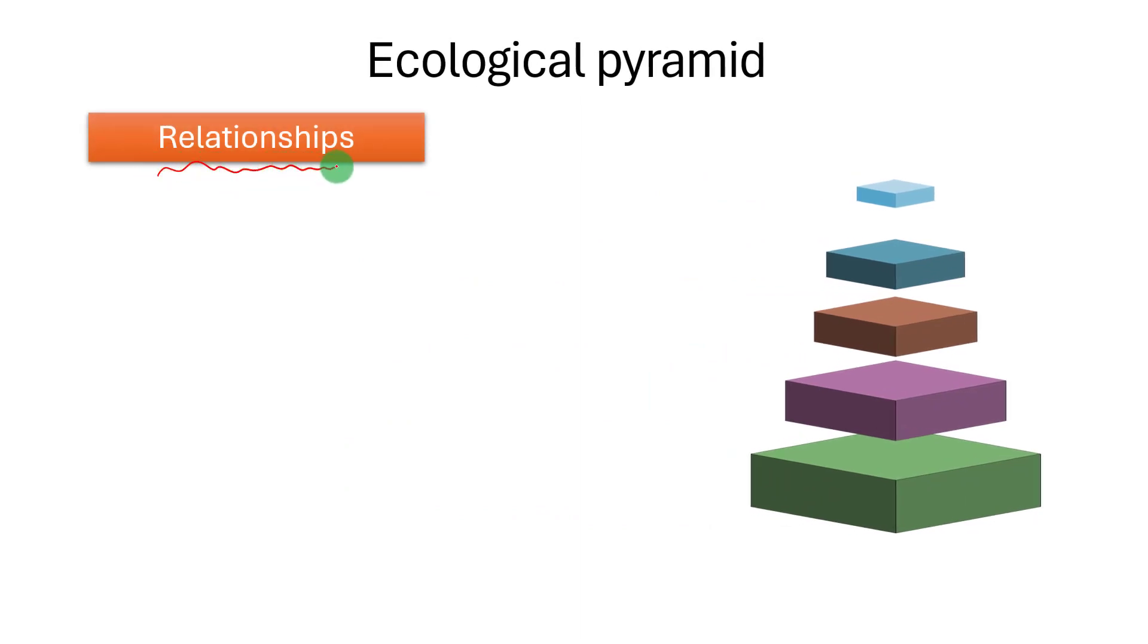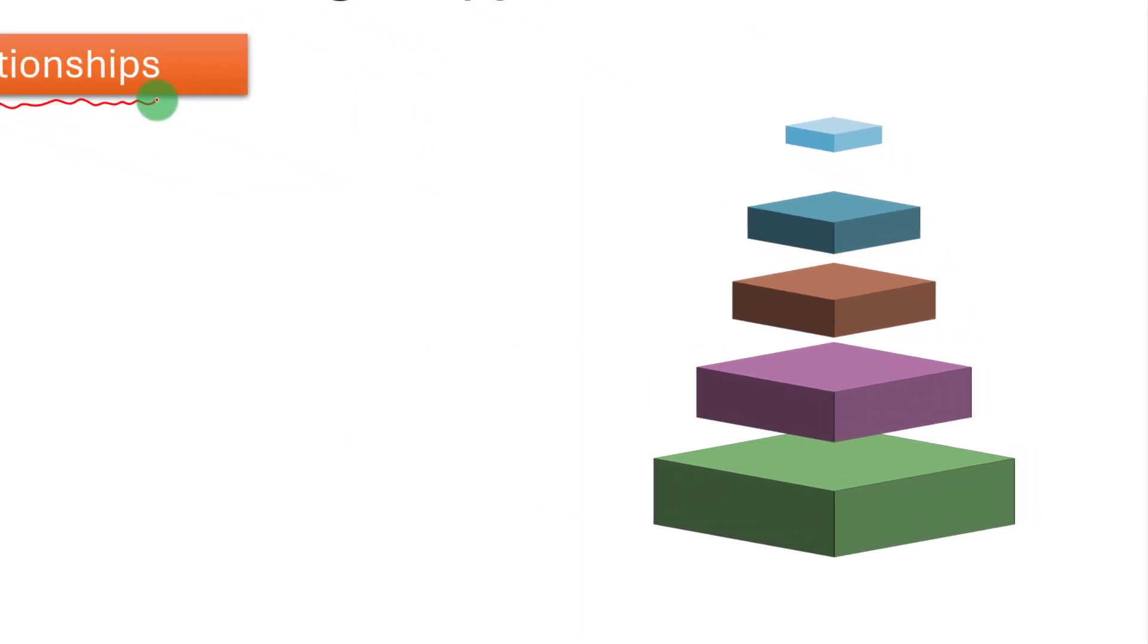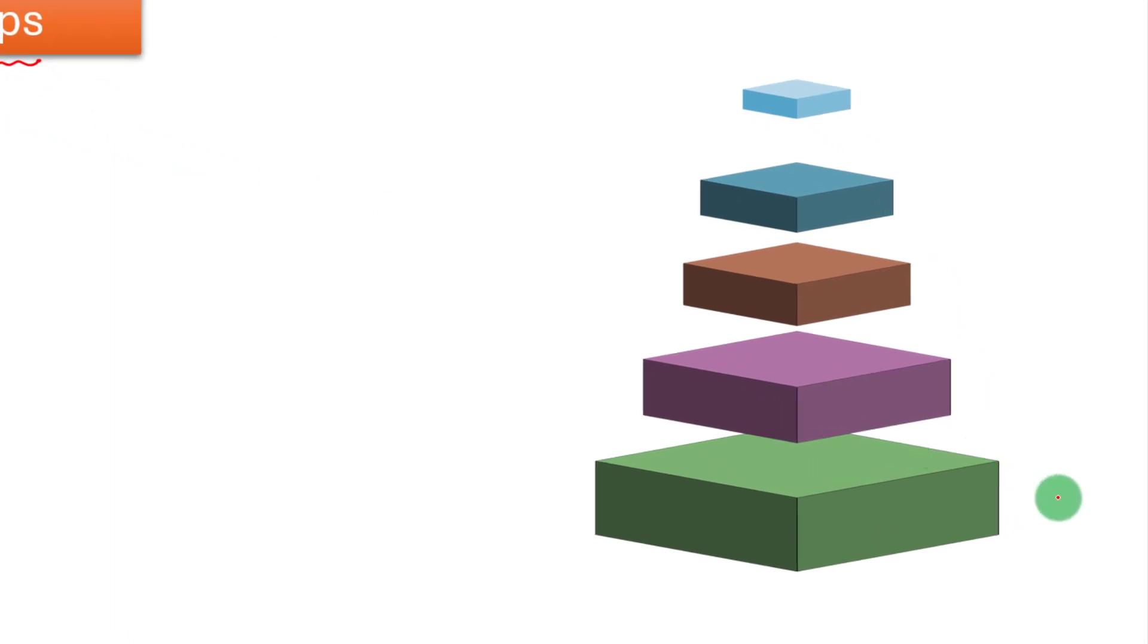You can see that the area of the base regions is gradually changing from the bottom to the top. In this example, the area of the bottom one representing the primary producer is more compared to others. The area of the top one is less.